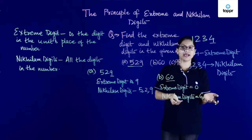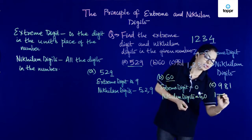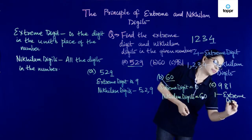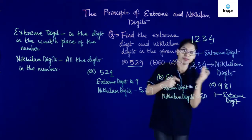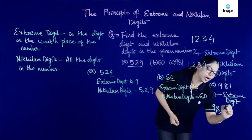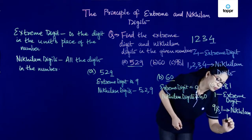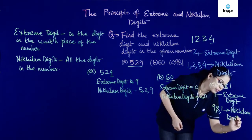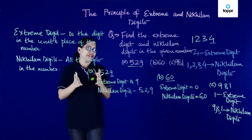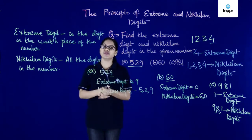For the third case, 981, we can say that 1 is the extreme digit and the remaining digits — 9, 8, and 1 — are the nickelam digits. So we've learned how to find which is the extreme digit and which are the nickelam digits in any given number.